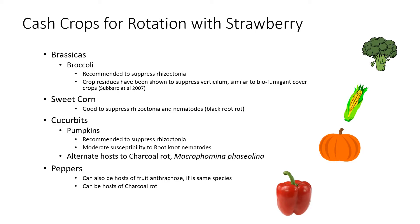To choose other cash crops for a three-to-five year rotation around our strawberry crop, we essentially want to choose crops that are not in the same plant family as strawberry. Examples include brassicas like broccoli, sweet corn, cucurbits — particularly pumpkins — and peppers. Research done in California found that broccoli was useful to suppress Rhizoctonia, and that incorporating crop residues into the soil had a biofumigant effect similar to suppressing Verticillium. However, broccoli is also a cool-season crop like strawberry, so it can't be planted directly after strawberry, but could be planted the following spring or fall.